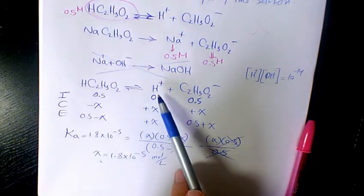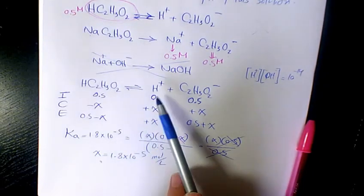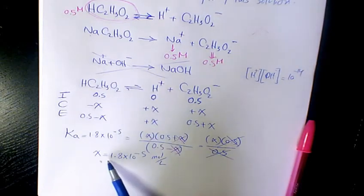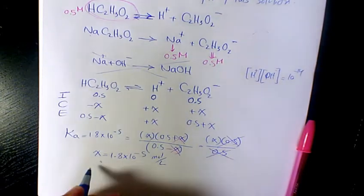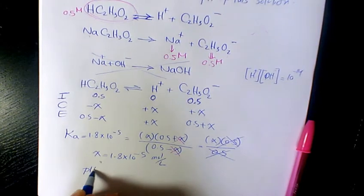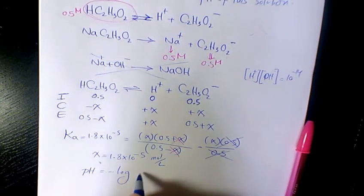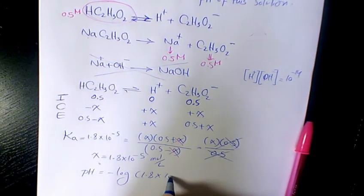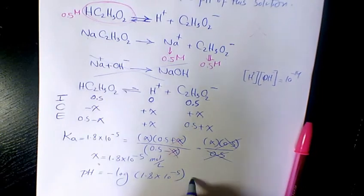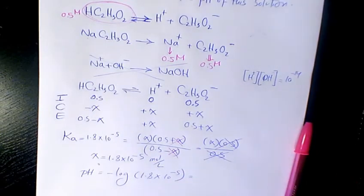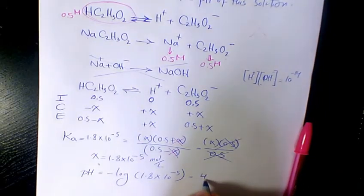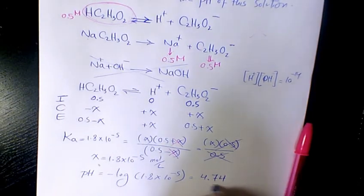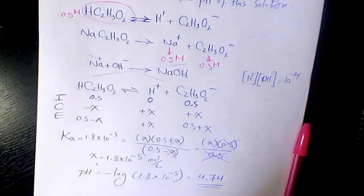The equilibrium concentration of the proton is 1.8 times 10 to the power of negative 5. So pH equals negative log of 1.8 times 10 to the power of negative 5, which gives us 4.74. That's the pH of the solution.